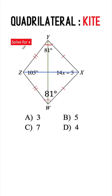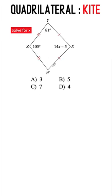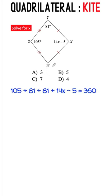In this problem, we are asked to solve for X. And since a kite is a quadrilateral, then the sum of all its interior angles must be 360 degrees.